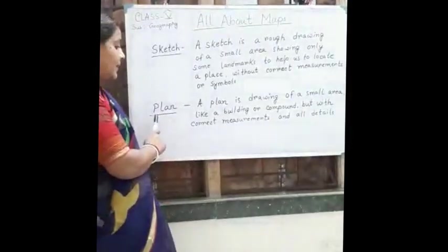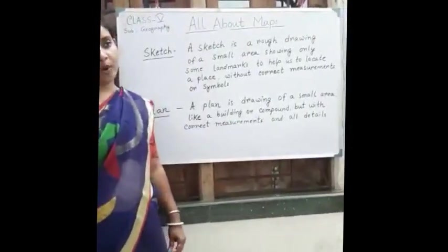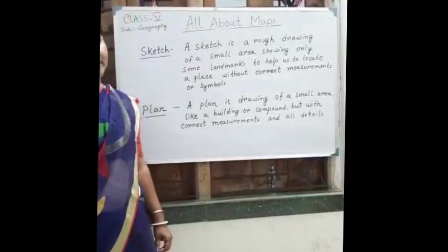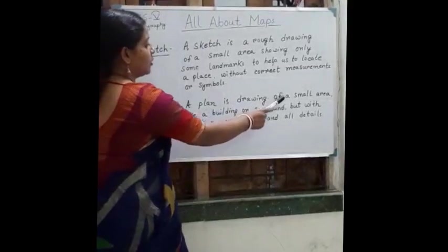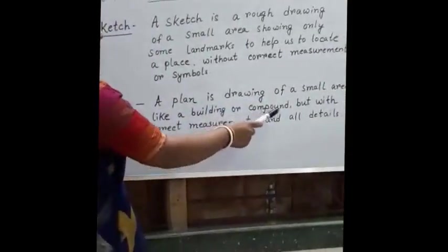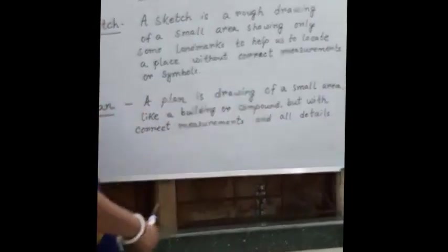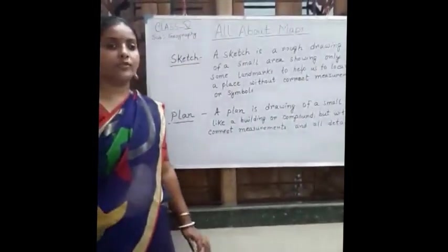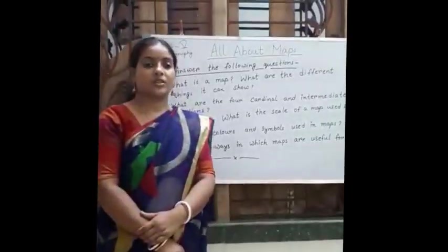Next is plan. A plan is also a drawing of a small area but with correct measurement. A plan is a drawing of a small area like a building or compound but with correct measurements and all details. Here, all the details of that area are being present.